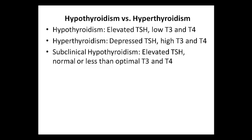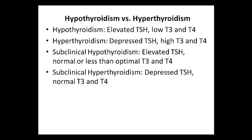With subclinical hyperthyroidism, you will have a suppressed TSH with a normal T3 and T4. As for the lab versus optimal range, while it's great to see your numbers fall within the laboratory range, you don't want the numbers to be on the high or low side even if they are within the lab range. And so there is an optimal range for each of these markers, which I'll discuss next.